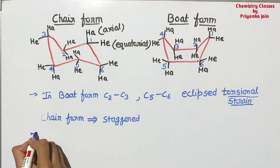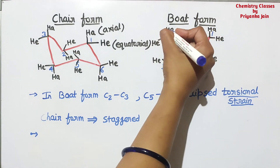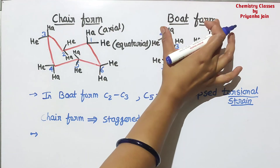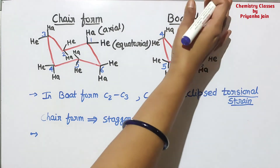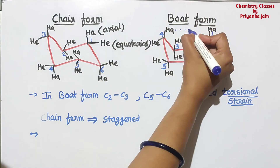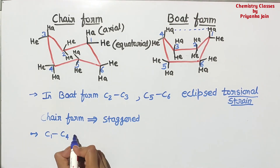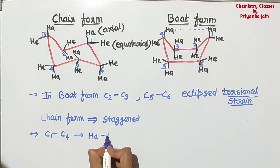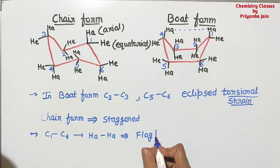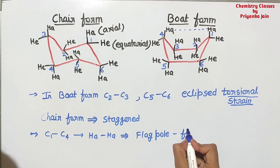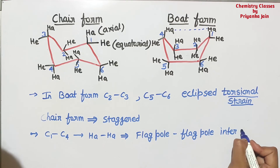Another factor: in the boat conformation, looking at the C1 and C4 positions, there are two axial hydrogens present in a flagpole manner. There is an interaction between these two hydrogens at C1 and C4, and such type of interaction is known as flagpole-flagpole interaction.